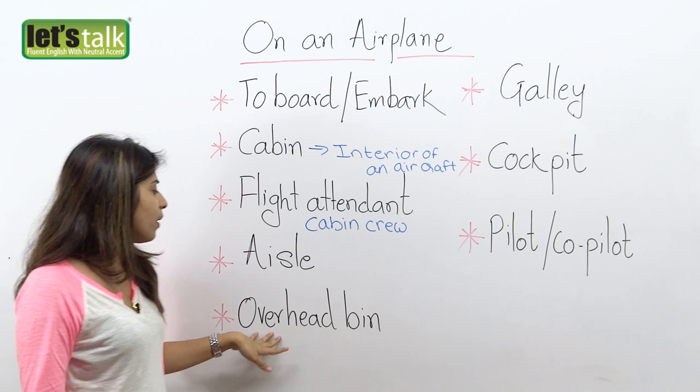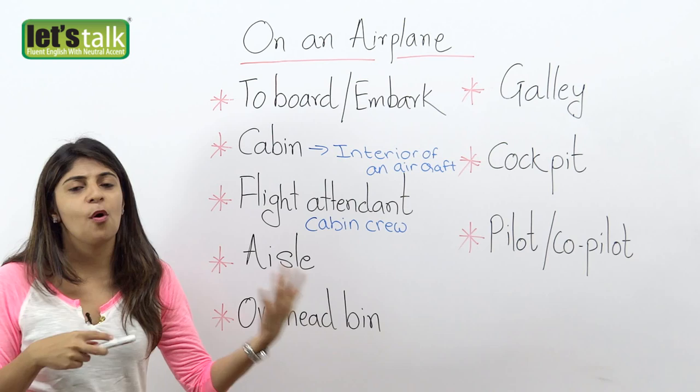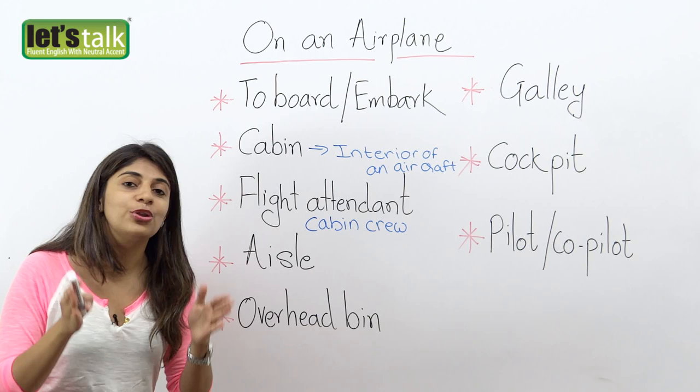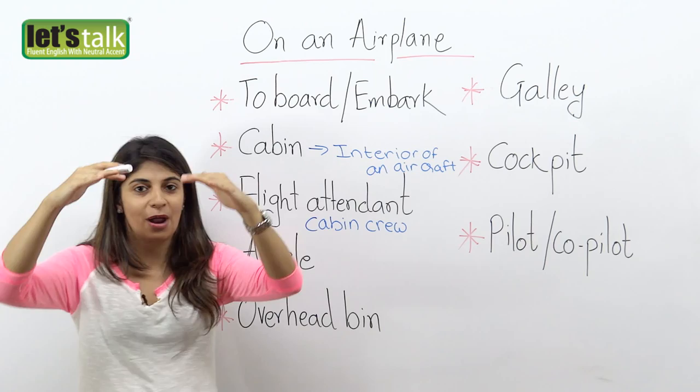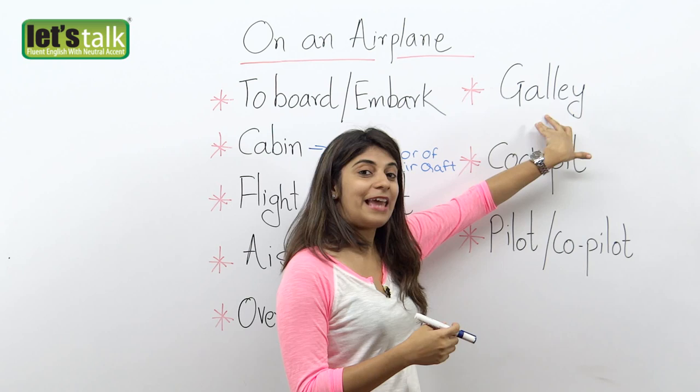We have overhead bin. Overhead bins are the compartments where you can store your carry-on luggage — your laptop bags or small carry-on bags that you carry when you walk into the aircraft. You are supposed to store these in the overhead compartment, which is right above your seats. So these are called overhead bins or overhead compartments.